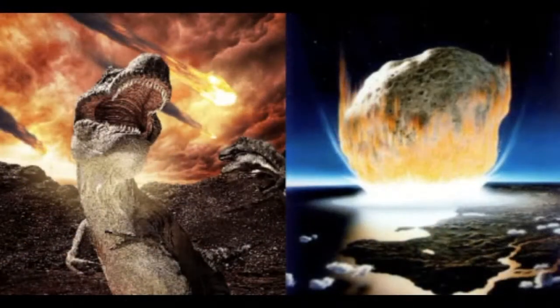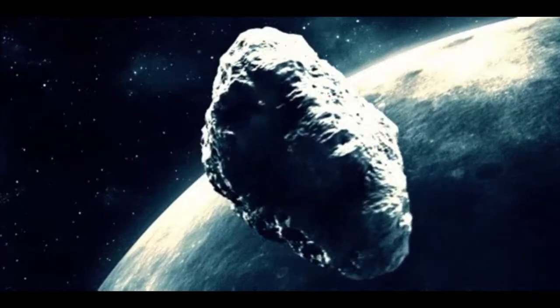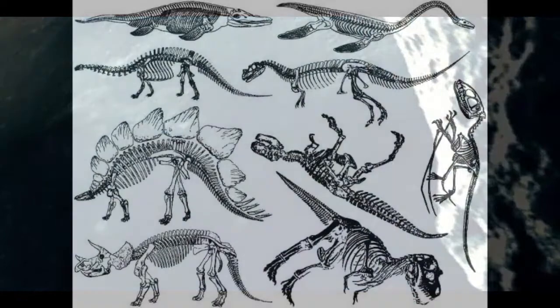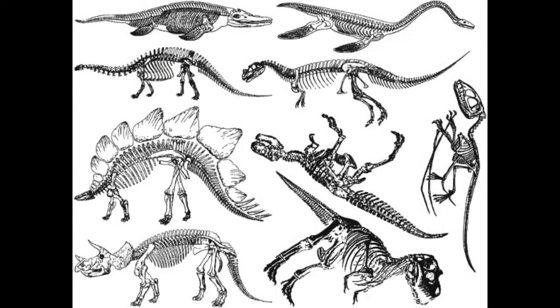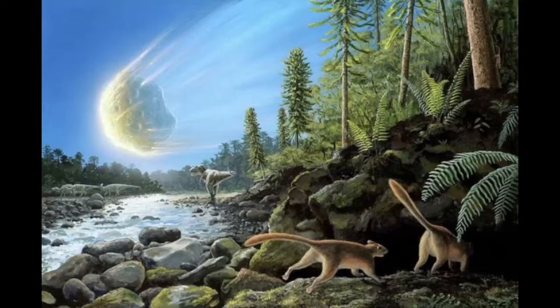The fact that the extinctions occurred simultaneously provides convincing evidence that they were caused by the deviant celestial body. Although a wide range of species vanished in the KT extinction, the best known being the land-bound dinosaurs, the mass extinction also provided evolutionary opportunities.